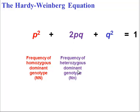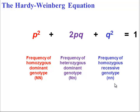2pq is the frequency of the heterozygous dominant genotype, because if you have the heterozygous genotype, you could get the dominant allele from your mom, recessive allele from your dad, or vice versa. So, it's 2 times p times q. q squared is our homozygous recessive genotype, because to get two recessive alleles, it would be q times q.